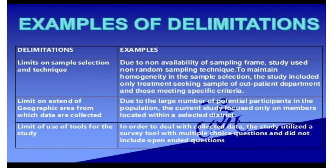Further examples: limits on sample selection and technique — due to non-availability of sampling frame, a non-random sampling technique was used to maintain homogeneity of sample selection. The study included only treatment-seeking samples from the outpatient department who met the specific inclusion criteria set by the researcher. Another example is limits on geographic area — due to the large number of potential participants in the population, the study focused on members located only at a particular district.